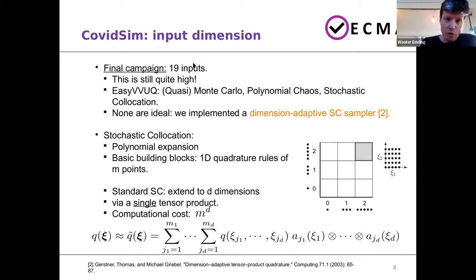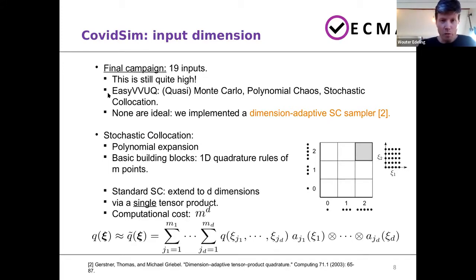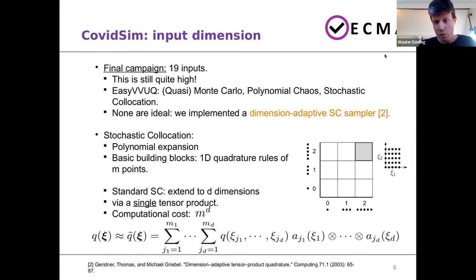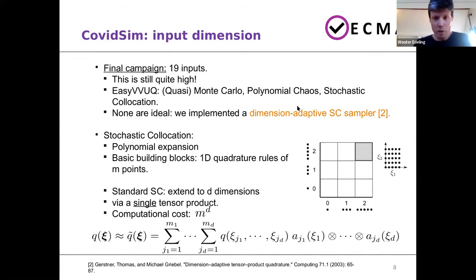19 inputs is still rather high. When we were asked to do this study, EasyVVUQ — our tool for uncertainty propagation — had Monte Carlo type methods, polynomial chaos, and stochastic collocation. These are not ideal, especially not the last two, for this high-dimensional input space. So what we did is we implemented a dimension-adaptive version of the stochastic collocation sampler.